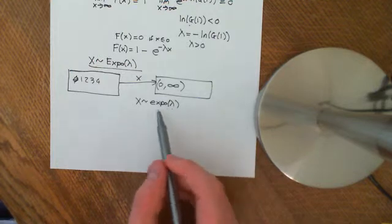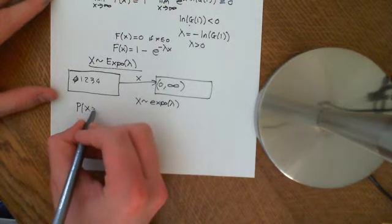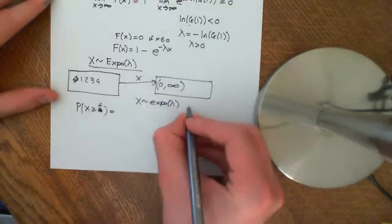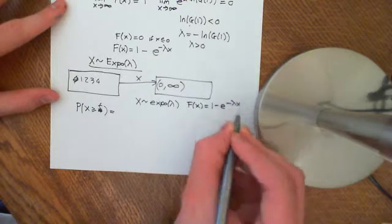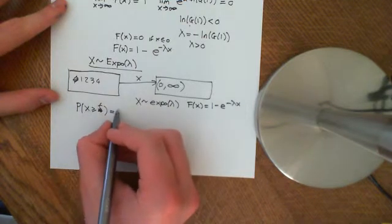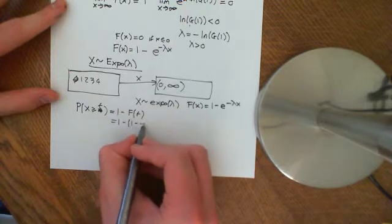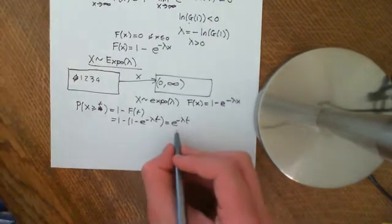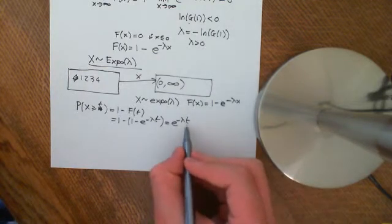The probability that X is greater than or equal to some little t for time is called the survival function. Recall that if you're exponentially distributed, your CDF, big F of little x, is equal to 1 minus e to the negative lambda times x. Therefore, the probability that you live greater than or equal to t years is 1 minus F of t, which equals 1 minus (1 minus e to the negative lambda t), giving us e to the negative lambda t. This is often called the survival function because it models the probability that any one person will survive longer than t years.